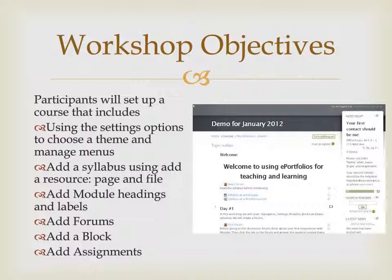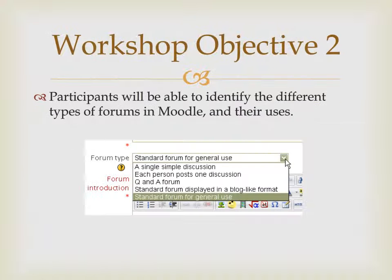The course setup is also expected to include a syllabus, module headings and labels, four different kinds of forums, and four different kinds of assignments. Aside from the news forum, which really just functions as a way to post announcements, Moodle has five different forums — including a forum displayed in a blog-like format and a Q&A forum. The second objective is that you will have an understanding of the five different kinds of forums and how and why you would use a particular forum.